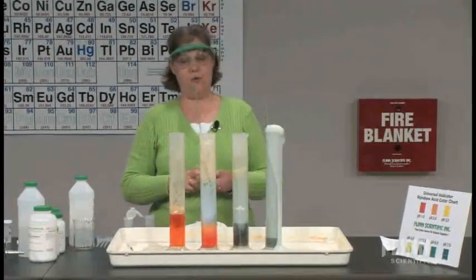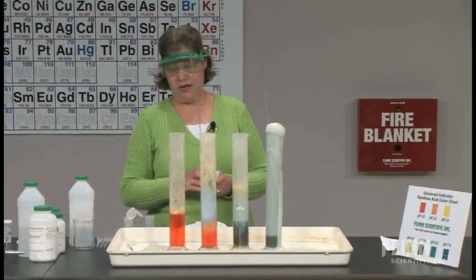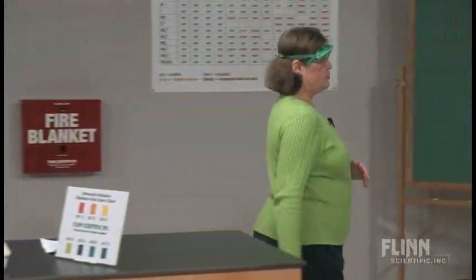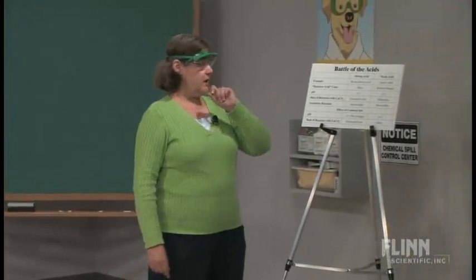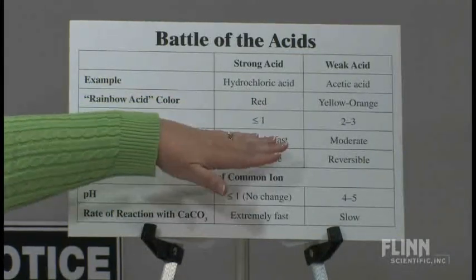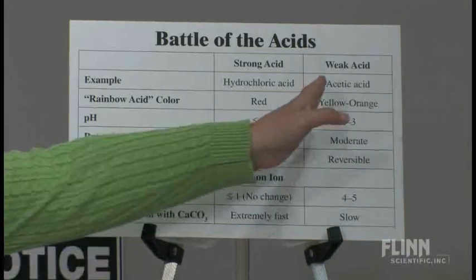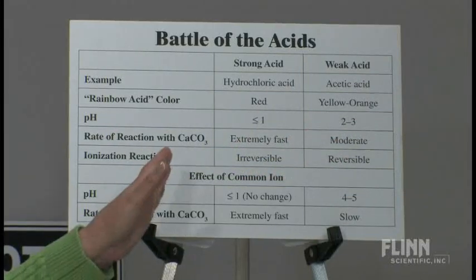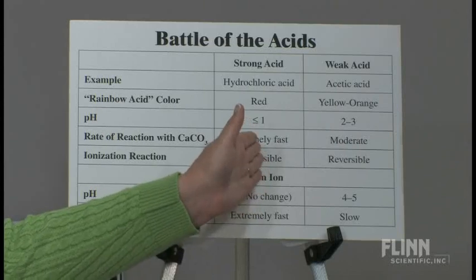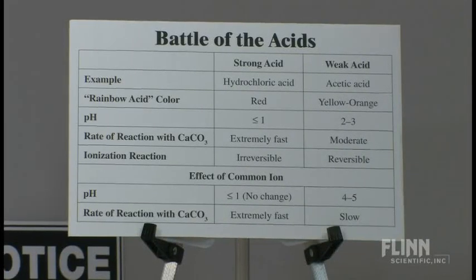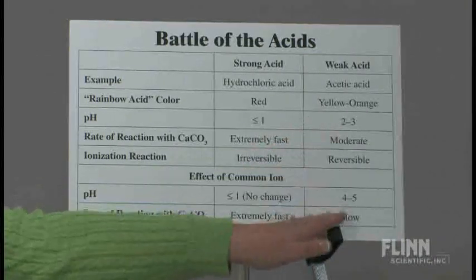Let's summarize what we've learned about the properties of strong and weak acids. HCl is a strong acid; acetic acid is a weak acid. Looking at the chart summarizing our observations: the hydrochloric acid was red with the rainbow acid indicator, indicating pH less than or equal to 1. The acetic acid was between orange and yellow-orange, so we said pH 2 to 3. The rate of the reaction with calcium carbonate is extremely fast for the strong acid, a little more moderate for the weak acid. The ionization of the strong acid is irreversible — we know that because adding chloride ion, the common ion, did not change the pH.